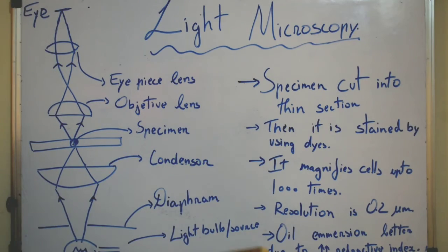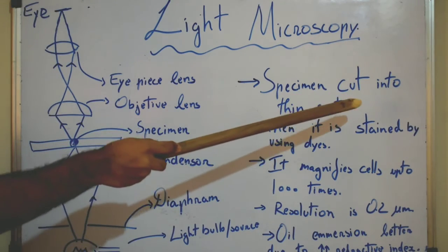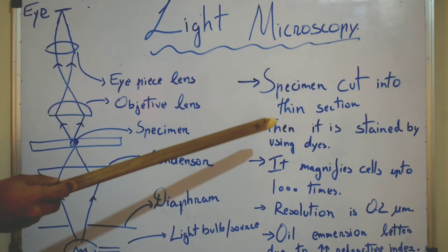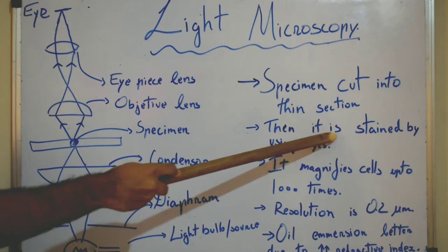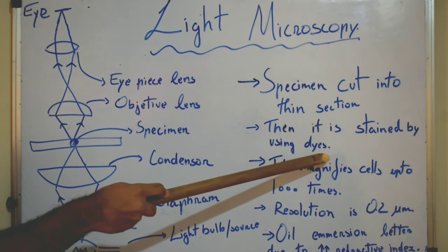Here are some features of light microscope. So specimen generally is to be cut into a thin section to visualize and put it under a microscope. Then before putting it under a microscope it has to be stained using specific dyes.